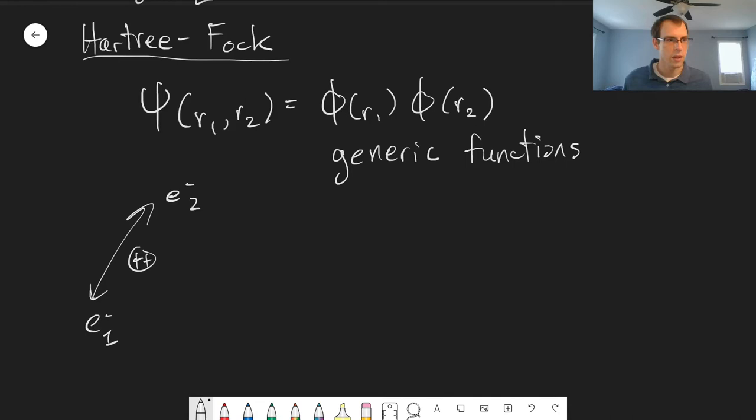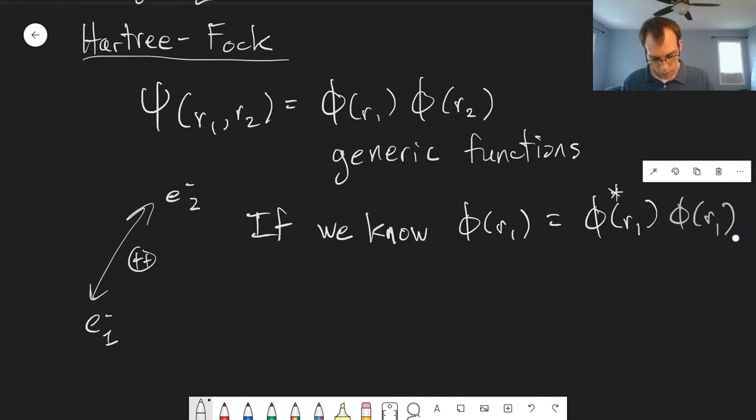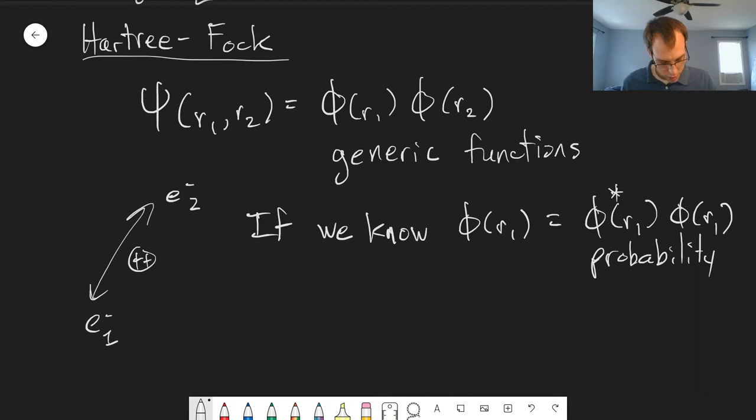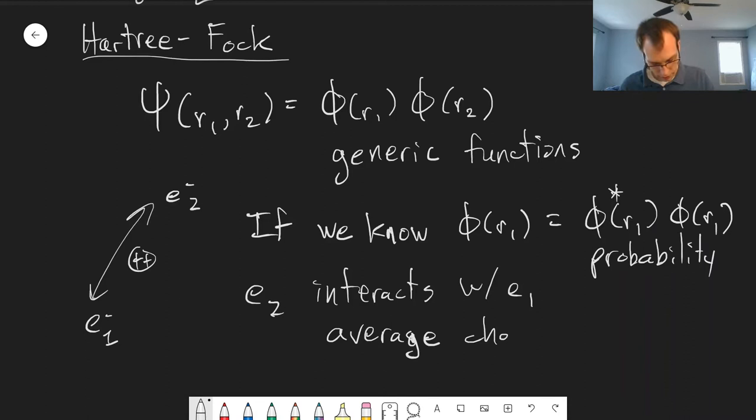So if we know one of these wave functions, say we know the solution for phi(R1), we know the electron one wave function, we know its probability then. That'll be equal to phi_1 star phi(R1), and this is going to give the probability distribution. Now our electron two is interacting with electron one, but we can kind of average out that interaction. And what the Hartree-Fock method does is we sort of take the average charge distribution of electron one based on this probability distribution.